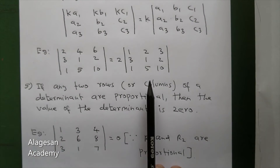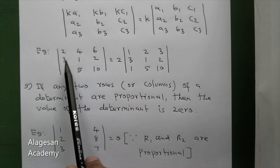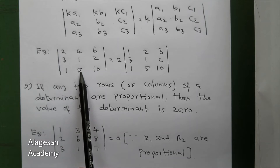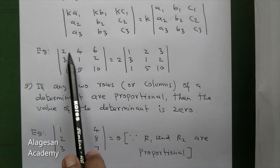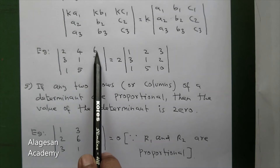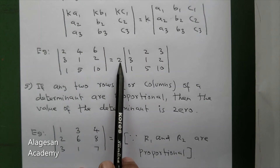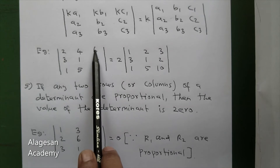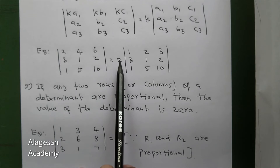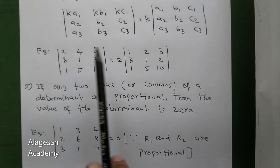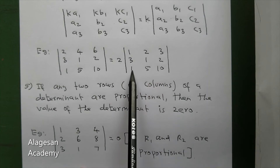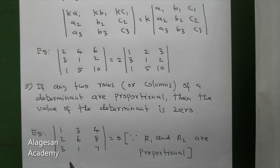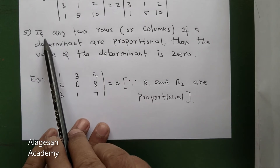Now a numerical example: the determinant has first row 2, 4, 6; second row 3, 1, 2; third row 1, 5, 10. In the first row, 2 is common — 2 into 1, 2 into 2, 2 into 3. So we take out 2 from the first row, giving 2 times the determinant with first row 1, 2, 3; second row 3, 1, 2; third row 1, 5, 10.